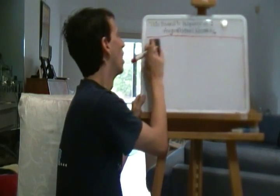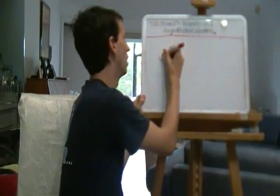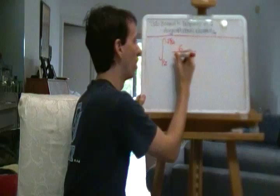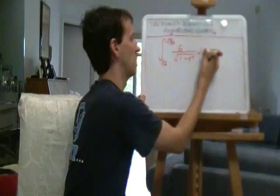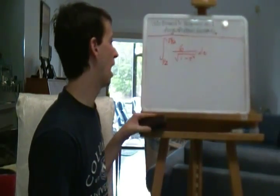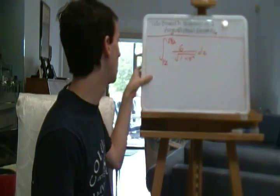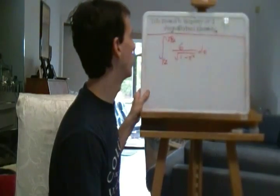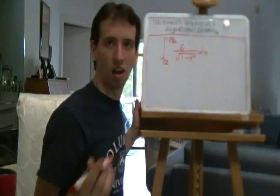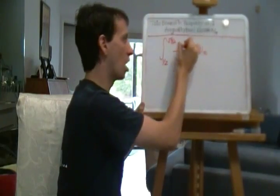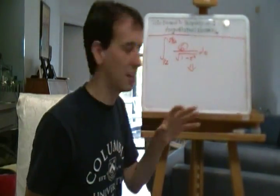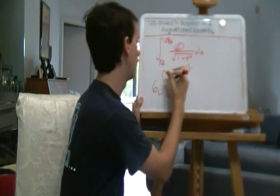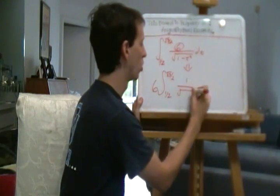I gave you the integral from 1/2 to √3/2 of 6 over √(1 − t²) dt. I gave you a hint that there's a very key observation to be made here — without it, this integral might be prohibitively difficult. We know that 6 is a constant, so we take it outside the integral. This is really the same as 6 times the integral from 1/2 to √3/2 of 1 over √(1 − t²).